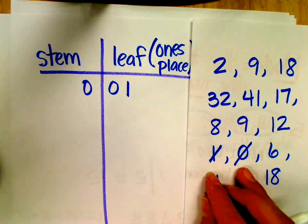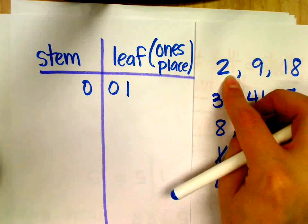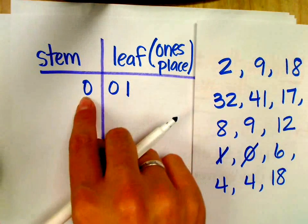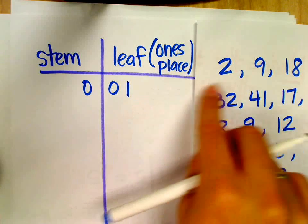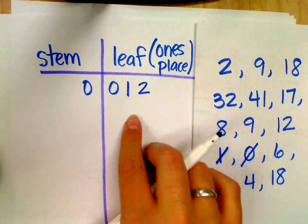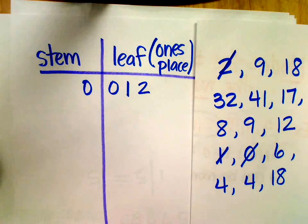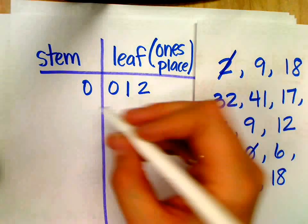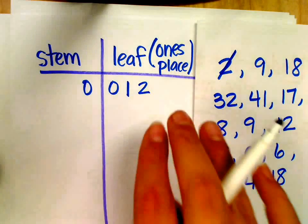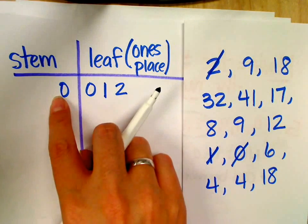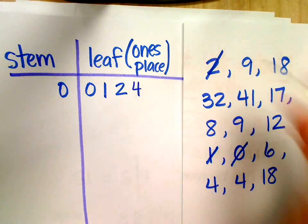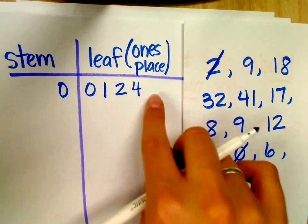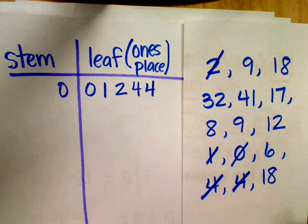My next smallest number would be what? Two. Two. For the number two, what's in my tens place? Nothing, or a zero, excuse me. And so I'm going to use this zero, and then what would I write here for my ones place? A two. No commas. So I've used two, I'm going to cross it off. Anything else that's small? What would be next? Four is next. So how would I write the four?